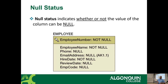Null status — can the field be empty or not? Employee number cannot be empty, name cannot be empty, phone number could be null, email address could be null, hire date cannot be null, and review date and employee code may be null because they haven't been assigned yet. Essentially, what you need to populate this record is an employee number, their name, and when they were hired.